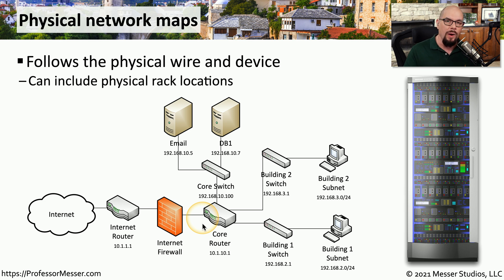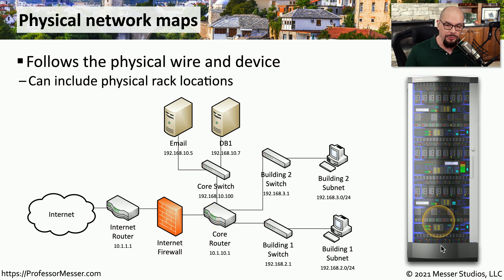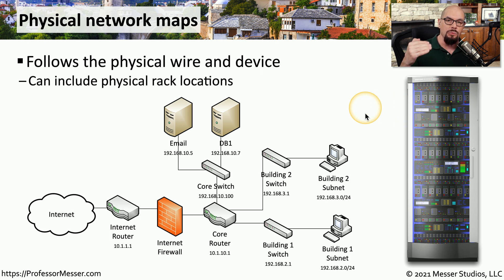This is a great way to see the flow of data as it goes through the network, and it's also very useful if you need to troubleshoot any of these connections. Sometimes this physical map may include an actual physical layout of a particular rack, so you can see exactly where a switch or router may be located on the rack itself.